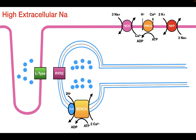The last negative inotropic agent is high extracellular sodium. High extracellular sodium stimulates the sodium-calcium exchanger because it increases the sodium electrochemical gradient, which allows more energy to be released by the exchanger when it brings in the three sodiums. When this occurs, the sodium-calcium exchanger is able to more easily move calcium out of the cell against its gradient. In other words, more calcium is allowed to leave the cell, therefore decreasing the amount of calcium in the cytosol and decreasing the contractility.